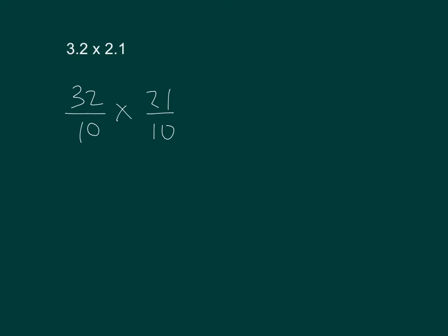Before we multiply these two decimals, let's estimate what our product will be. 3.2 is pretty close to 3, and 2.1 is pretty close to 2, so 3 times 2 is 6. So our answer should be around 6 — it should be a little bit more than 6.